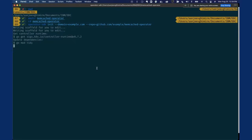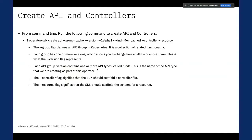Once the init command has run, we need to create an API and spec. From the command line, we run the create API command and provide group, version, and kind as parameters, along with controller and resource flags. The group flag defines an API group in Kubernetes — it is a collection of related functionality, and each group has one or more versions. Each API group version contains one or more API types called kinds. In our case, we're going to name it Memcached. The controller flag signifies that the SDK should scaffold the schema and other resources and configuration files.